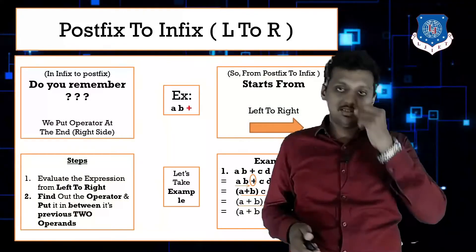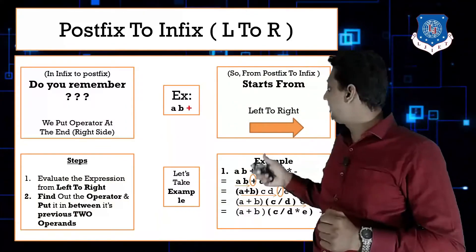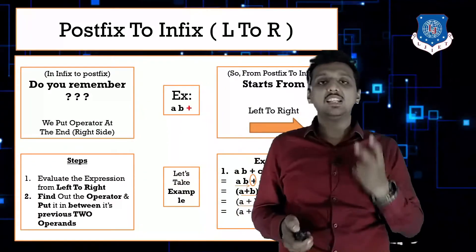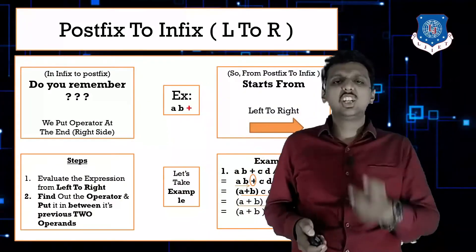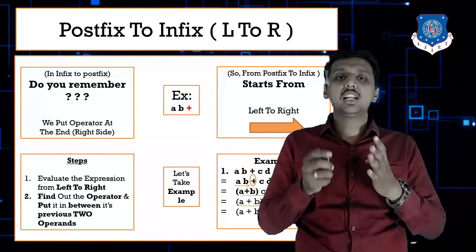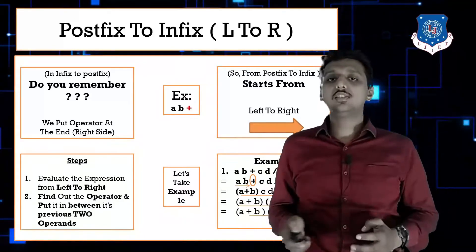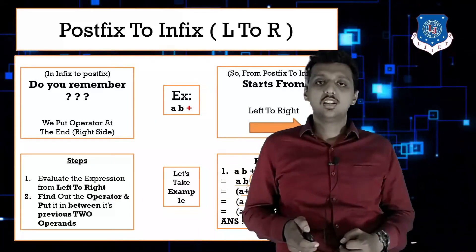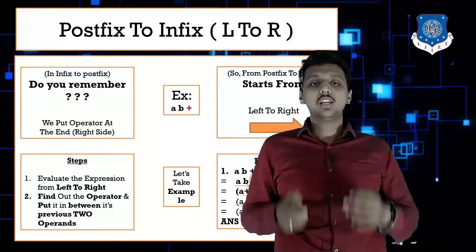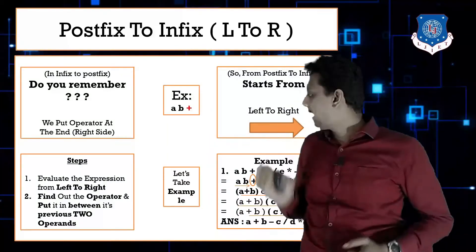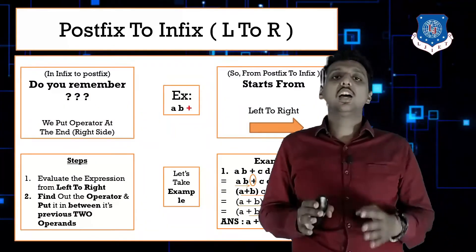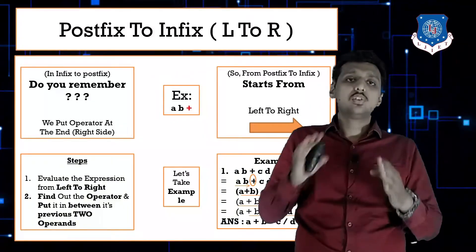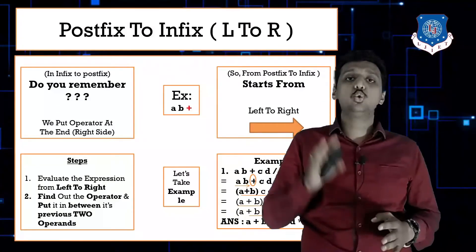Now before the minus we have only two remaining operands: (a+b) and (c/d)*e. Take the minus and put it between them. The final answer is: (a+b) - (c/d)*e. This is how you convert a postfix expression into infix.